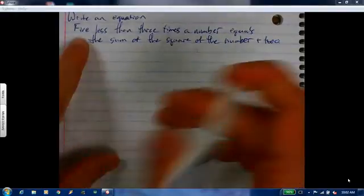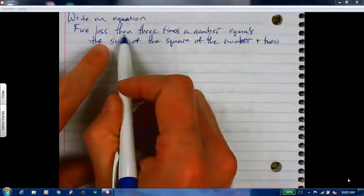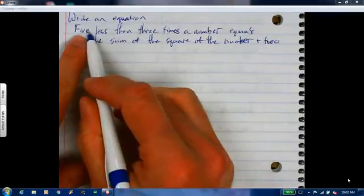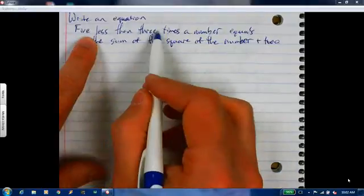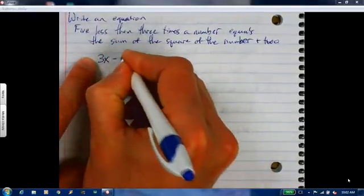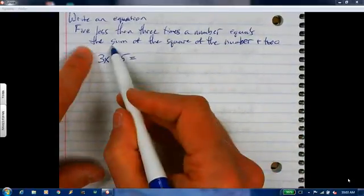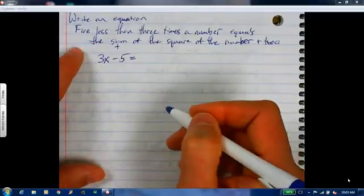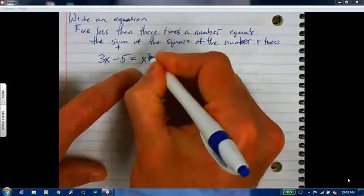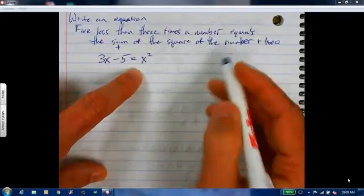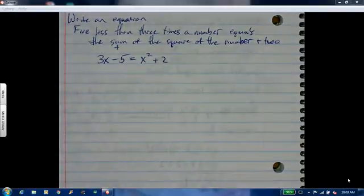So five less than. I do like putting the less than in there because that's kind of the hardest one. Because five less than is not five minus this, it's this minus five. So five less than three times a number would be three times a number minus five equals the sum. Sum means we're going to be adding the square of the number. So x squared is not square root, it's the square. And two, so you're adding two. You don't have to solve it. You don't have to do anything else, just write that.